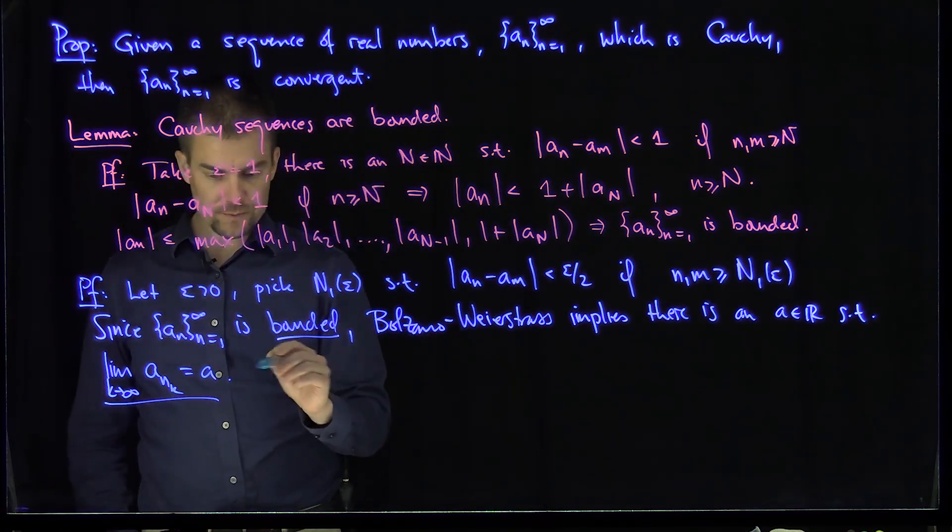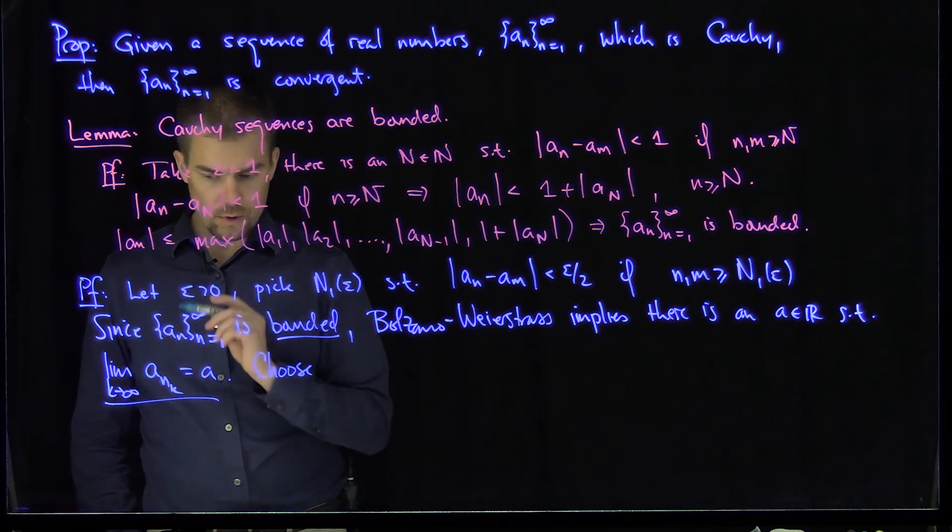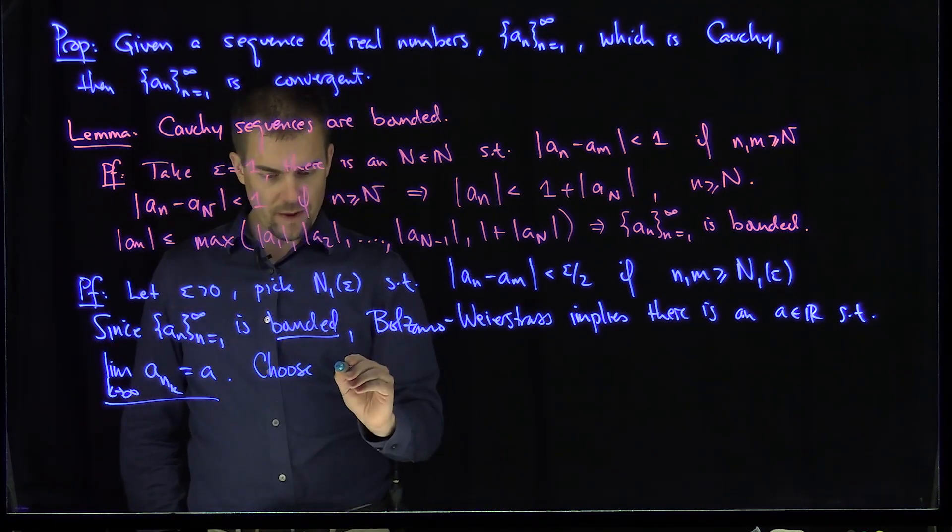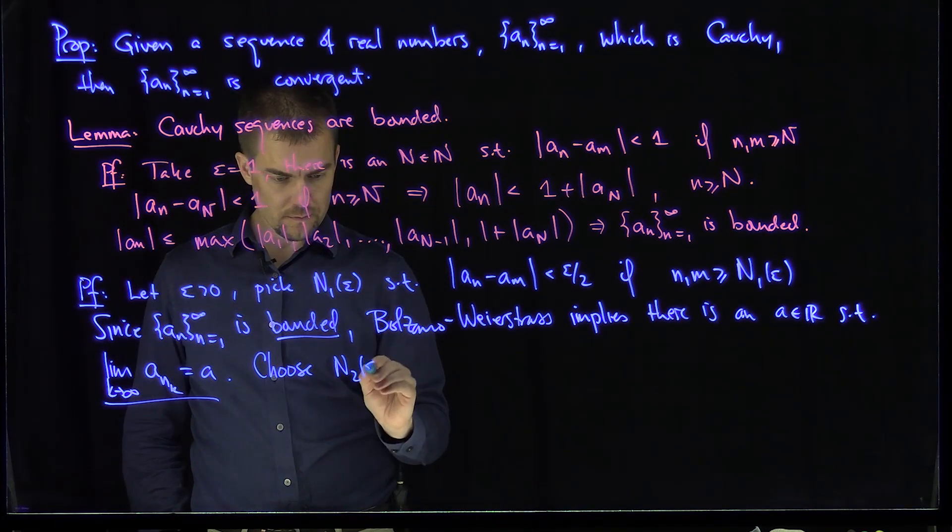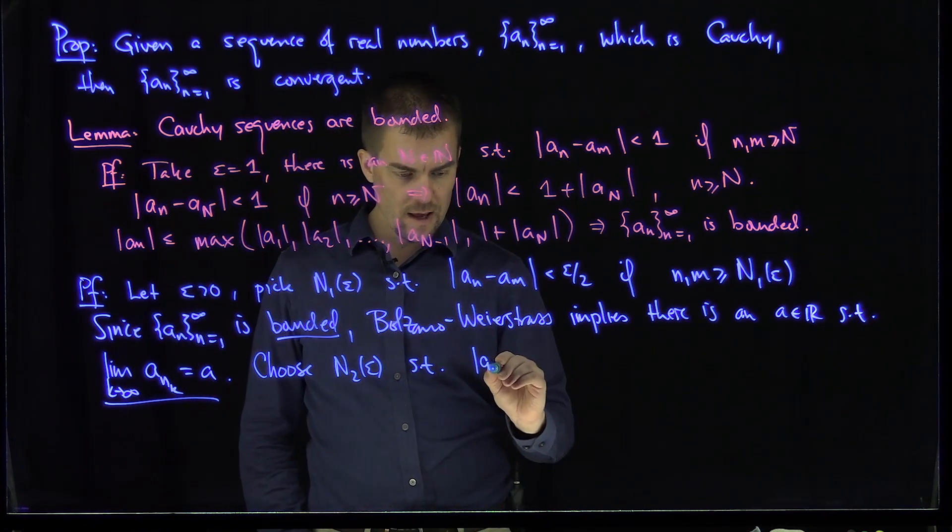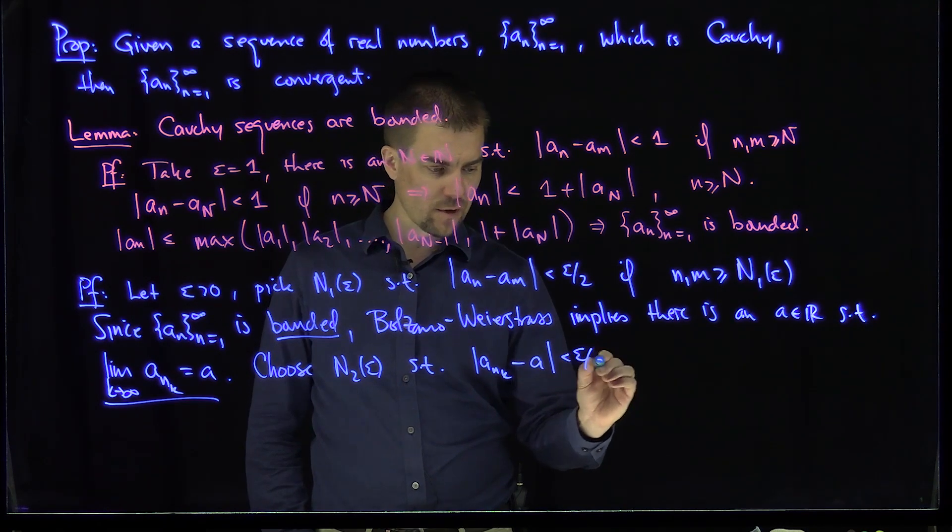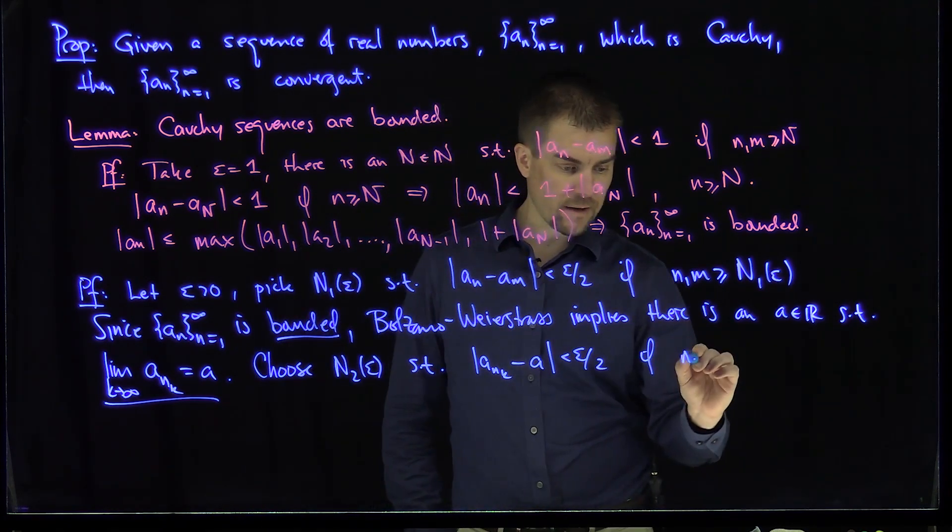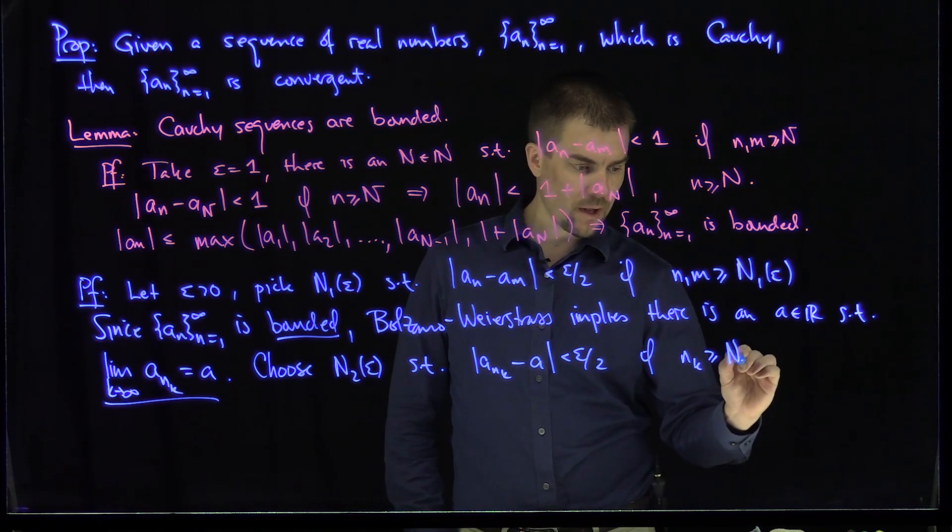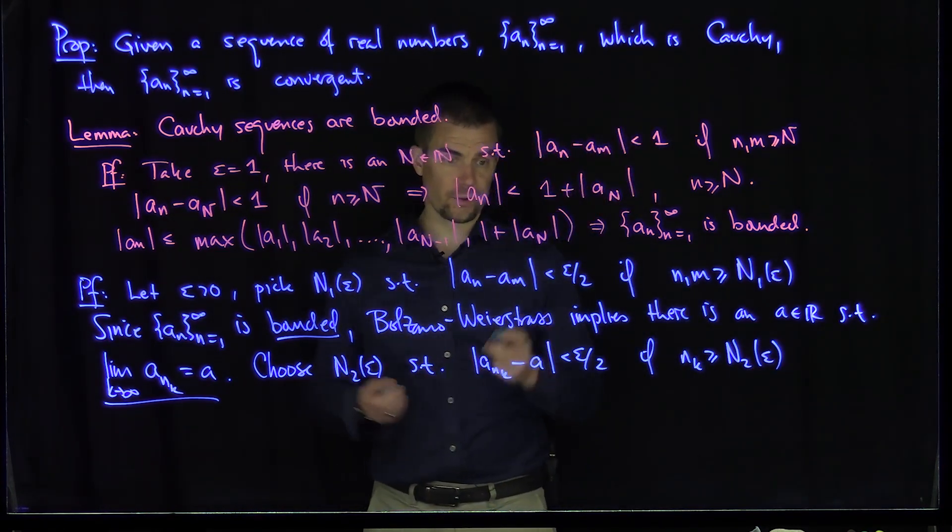So what I'm going to do is I'm going to choose N_2(epsilon) such that |a_{n_k} - a| is less than epsilon over 2 if n_k is bigger than or equal to N_2(epsilon). We can do that by the convergence, right?